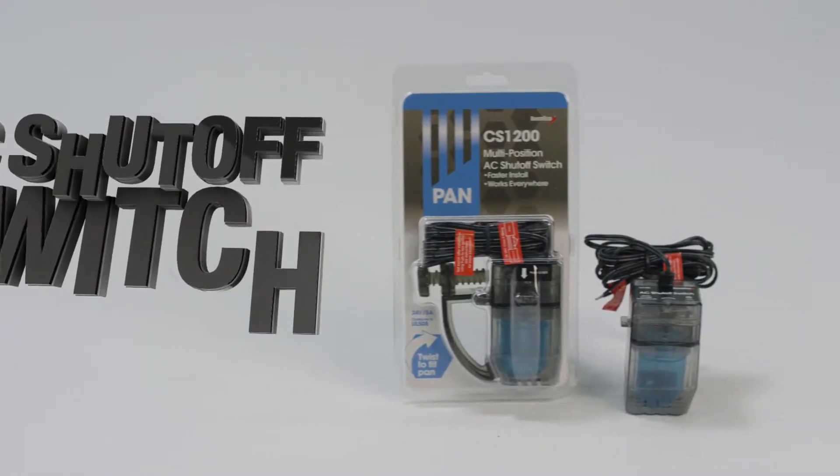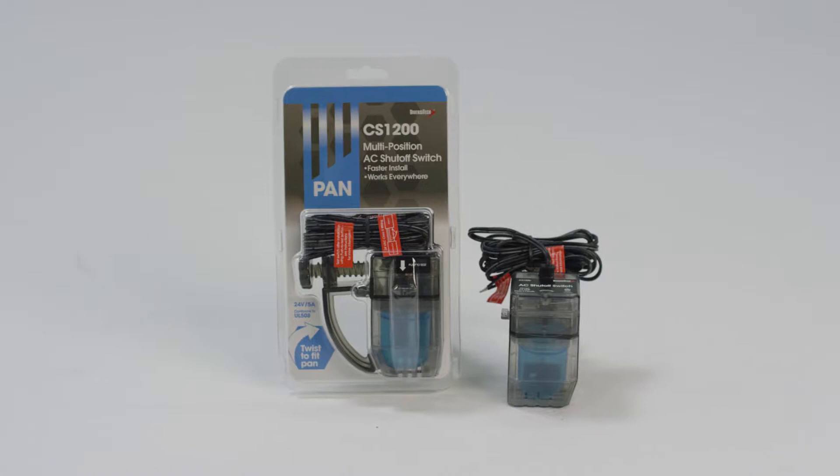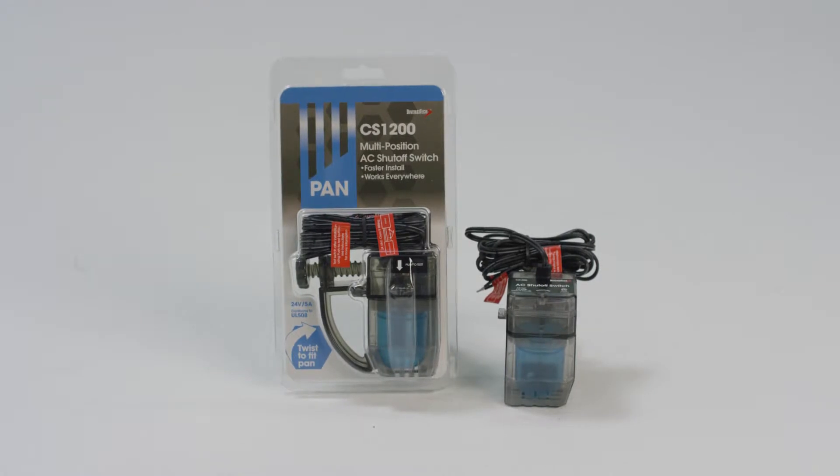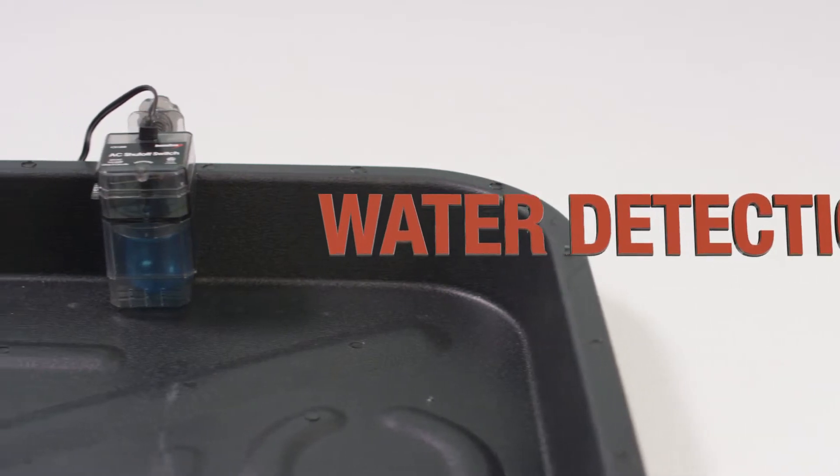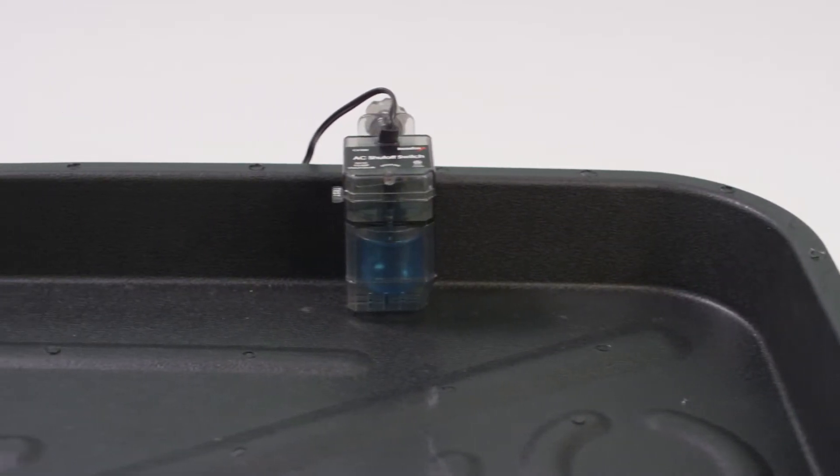Diversitec's CS1200 AC shutoff switch is a fast installing, reliable, condensate overflow detection switch. It detects water in the secondary drain pan quickly and shuts off the equipment to prevent damage.